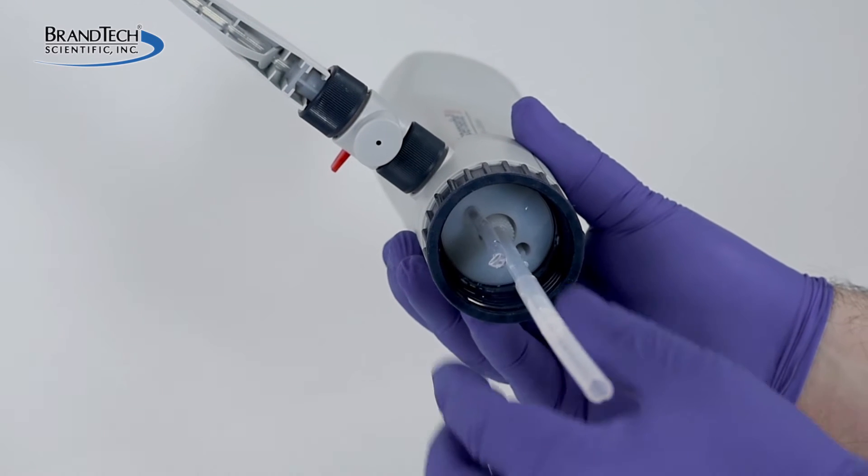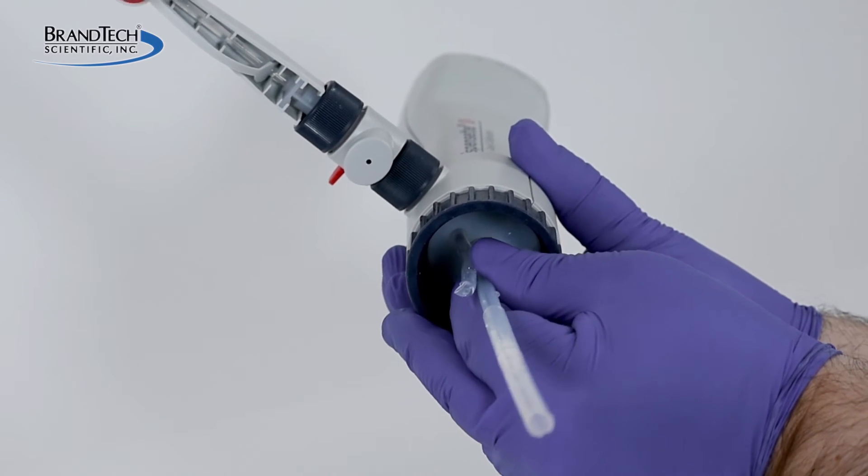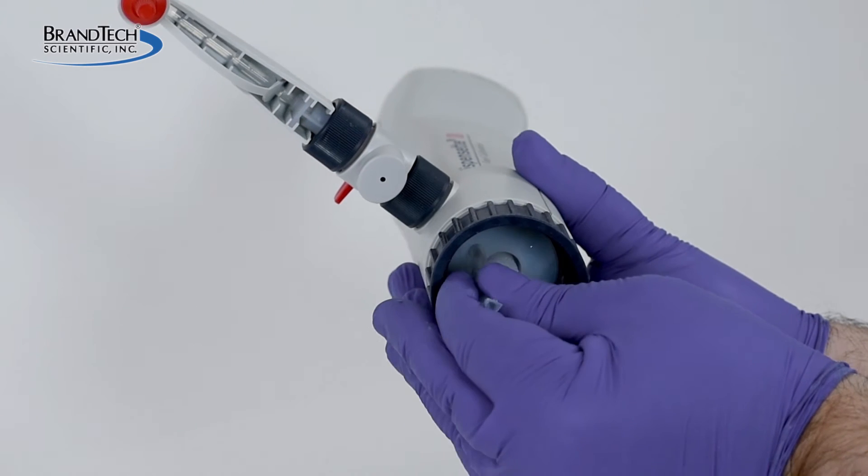Remove the Dispenset from the bottle and pull out the filling and recirculation tube. Now remove the piston from the instrument.